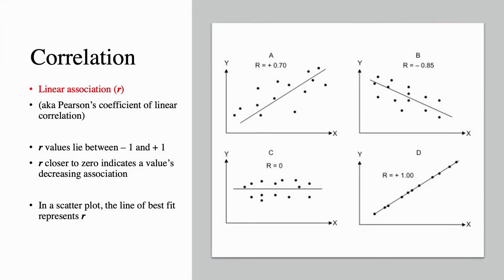Correlation: linear association, also known as Pearson's coefficient of linear correlation. The r values lie between minus 1 and plus 1. An r value closer to 0 indicates decreasing association. In a scatter plot, the line of best fit represents r.